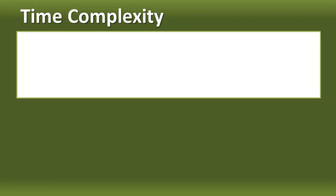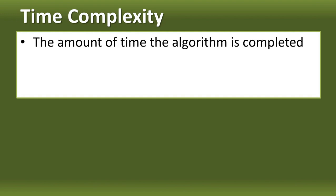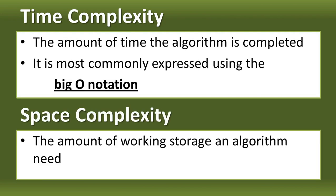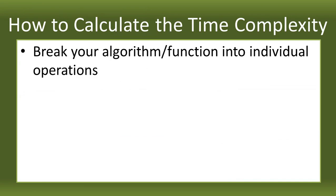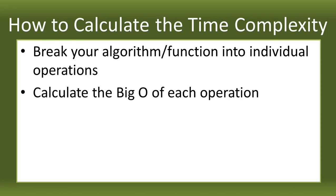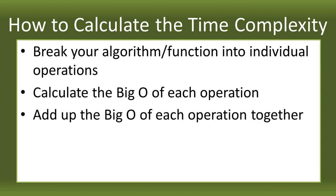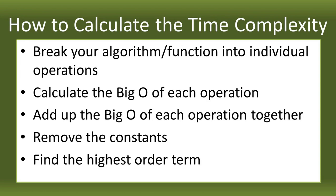The first complexity we'll discuss is time complexity — the amount of time an algorithm takes to complete. How much time will an algorithm use to finish? It is commonly expressed using Big O notation. We also have space complexity — the amount of working storage an algorithm needs, which are the data structures used in the algorithm. To compute time complexity: first, break the algorithm into individual operations. Then compute the Big O of each operation. After that, add up the Big O of each operation, remove the constants, and find the highest order term.